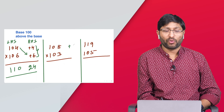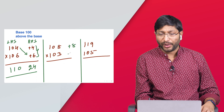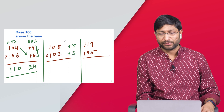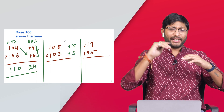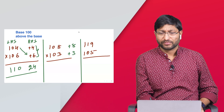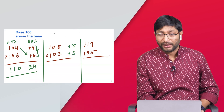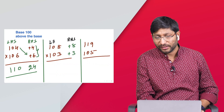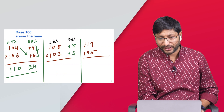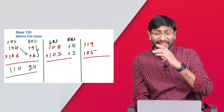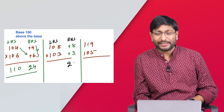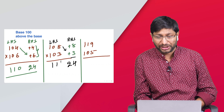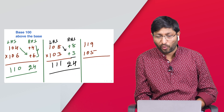Now for 108 × 103: base is 100, differences are +8 and +3. Right-hand side: 8 × 3 = 24. Left-hand side: cross addition — 108 + 3 = 111. So the answer is 11124. Compare how many steps we used here versus the traditional method — it's much fewer!